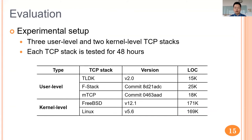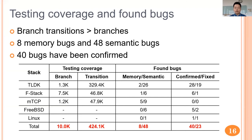To validate the effectiveness of TCP Fuzzing, we used it to test five open-source and widely used TCP stacks, including three user-level ones and two kernel-level ones, testing each for 48 hours. TCP Fuzzing covered many more branch transitions than branches, indicating that TCP stacks have more state transitions than states during execution. TCP Fuzzing found 56 real bugs in the five tested TCP stacks, including eight memory bugs and 48 semantic bugs. We reported these bugs to related developers, and 40 of them had been confirmed, with 23 confirmed bugs having been fixed.